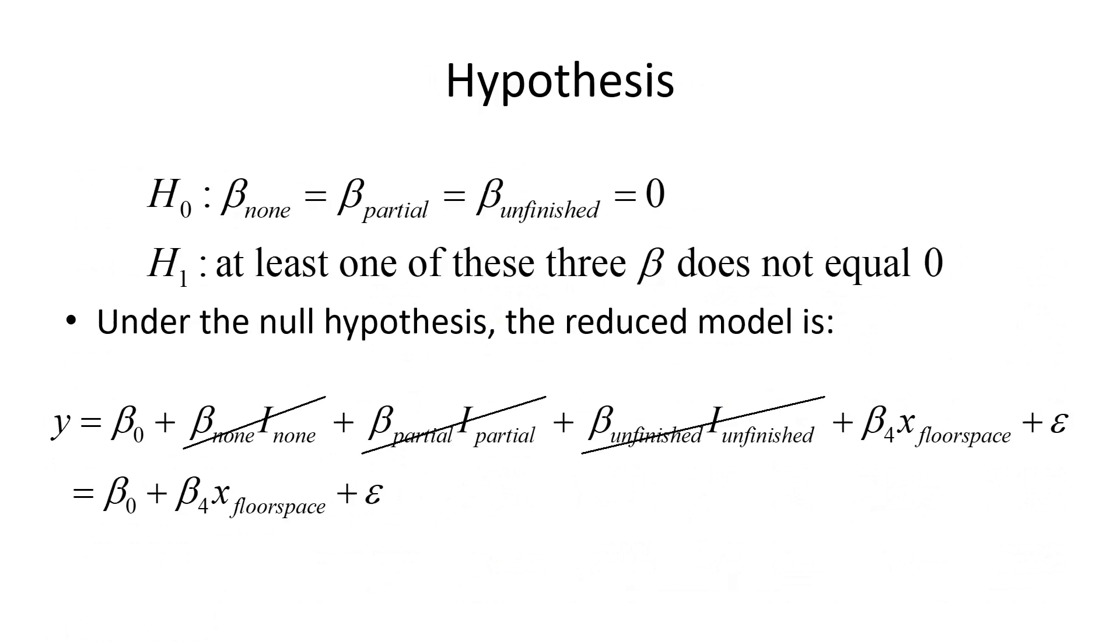The hypothesis is that these three things equal zero. The alternative is at least one of these betas does not equal zero. Under the null hypothesis, the reduced model is—well, if these betas are zero, we can throw these three things out. We are left with a model that only has intercept and floor space.